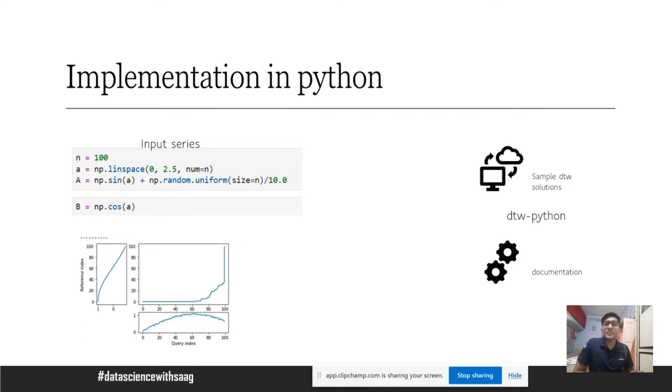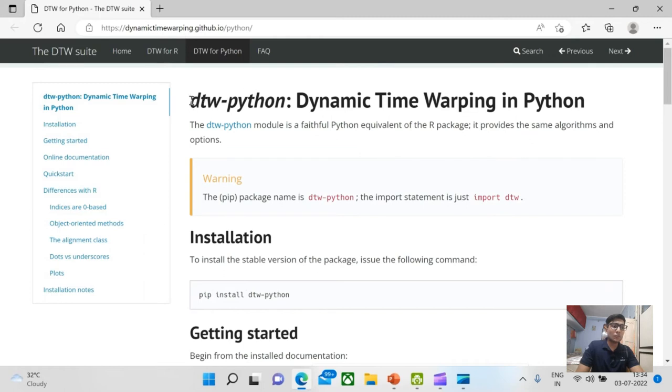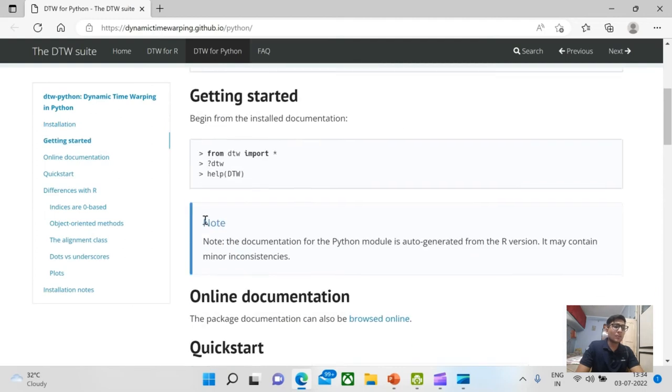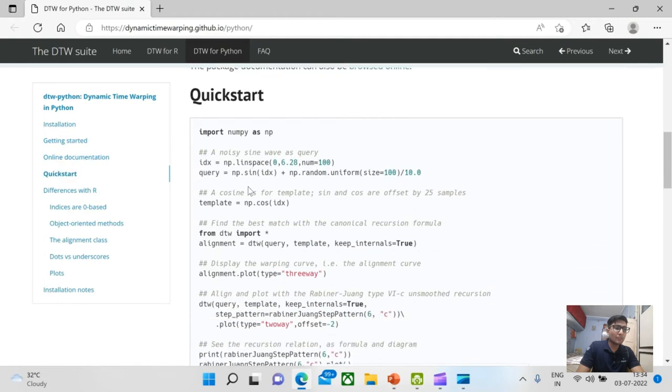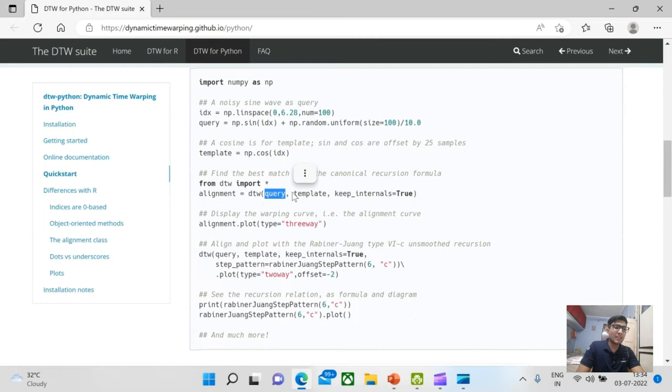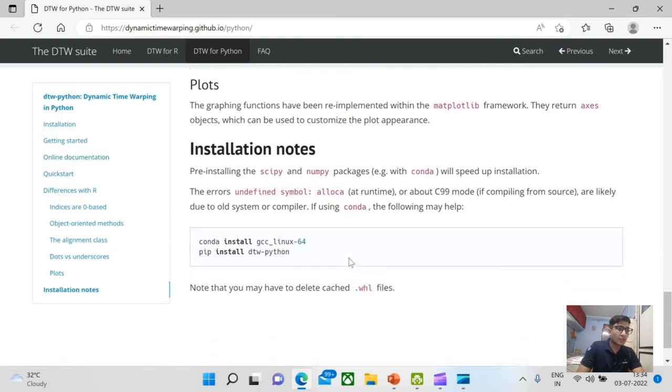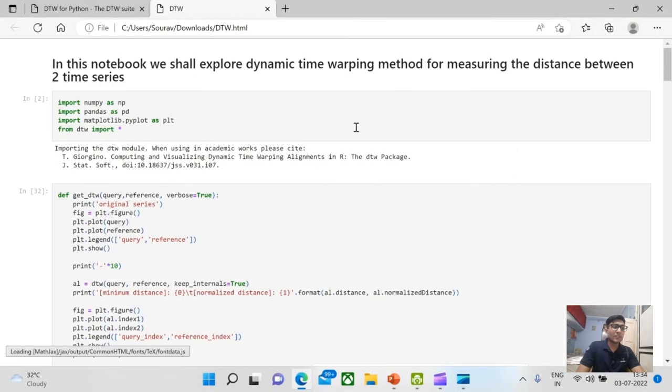Let us see how Python implements DTW algorithm. It is very simple to use DTW in Python using just a simple library known as DTW Python. Let us see the documentation. I hope the screen is visible here. So if we go forward and see DTW Python, the library has the documentation listed up. You can install it using pip. You can get the information using the following commands. And it's as simple as importing the library DTW and using DTW, passing the query. Query is nothing but series a, template is series b.